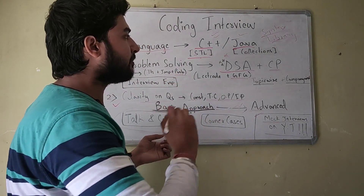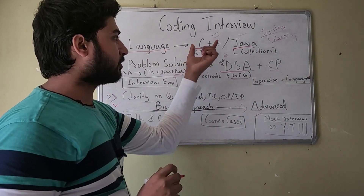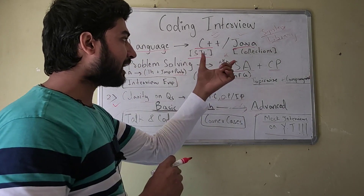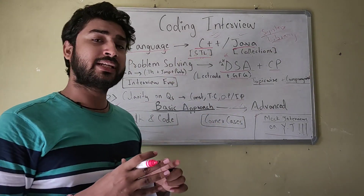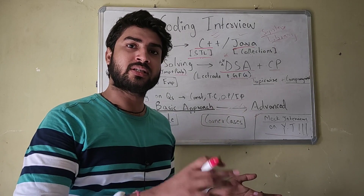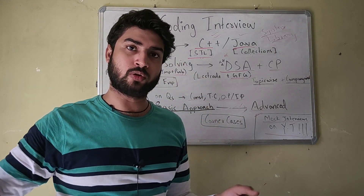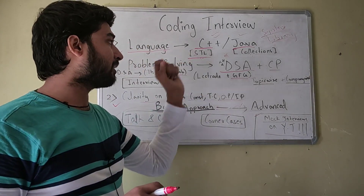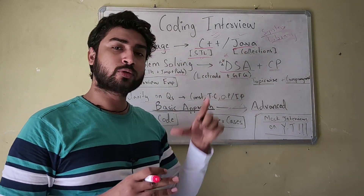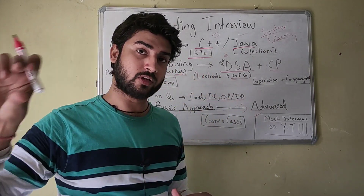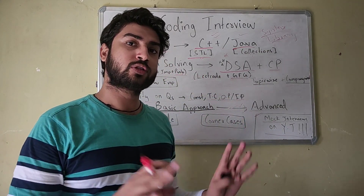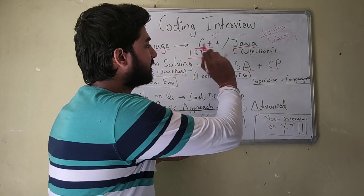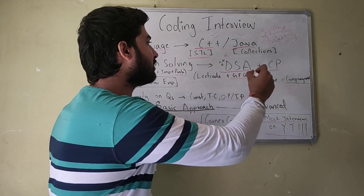Once you are clear with the syntax, the next thing you need to do is learn the library of that language. Learning the library will be very helpful in solving complex DSA-based problems. C++ has the STL library and Java has Collections. If you are learning C++, learn STL. If you are learning Java, learn Collections. To learn STL, just go on YouTube and search 'C++ STL in one video' — watch any one and you will be clear. Likewise, search 'Java Collections in one video'. You need to have a good knowledge of the library.